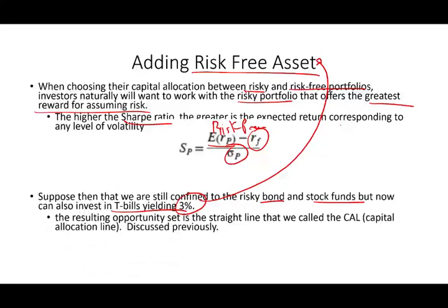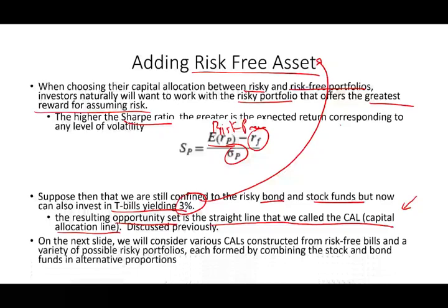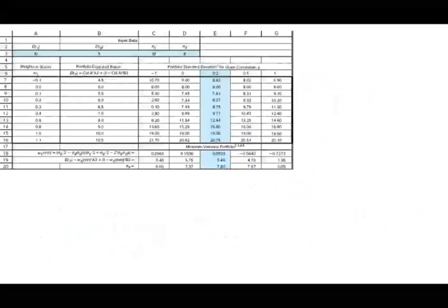The resulting opportunity set when we introduce a risk-free asset is a straight line called the Capital Allocation Line, or CAL. We'll consider various CALs constructed with risk-free bills and a variety of possible risky portfolios, each formed by combining the stock and bond funds in alternative proportions. I'm going to redraw the graph with different scaling to accommodate this new information.